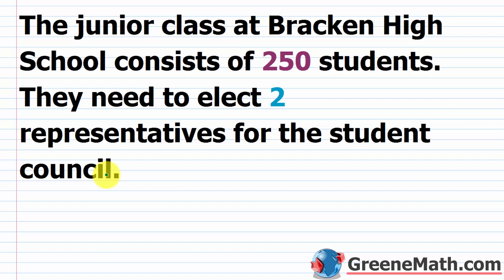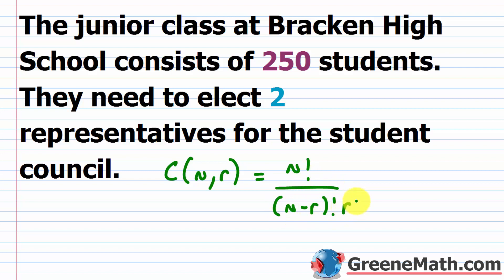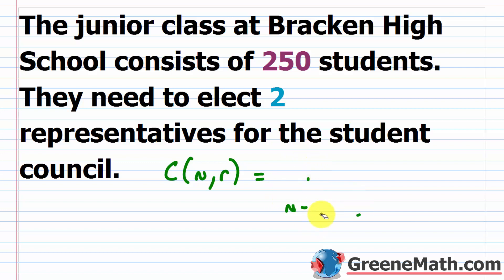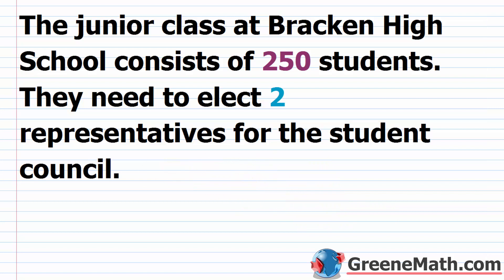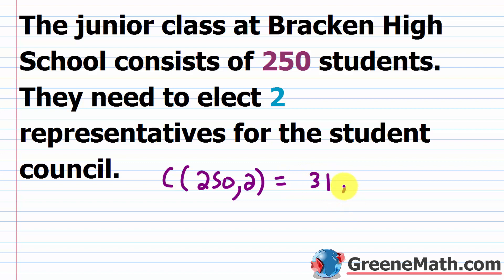Since the order doesn't matter, we use the formula for combinations — which we saw when discussing the binomial theorem. The formula is C(N, R) equals N factorial over (N minus R) factorial times R factorial. That extra R factorial in the denominator divides out the duplicates. Plugging in: C(250, 2) gives a result of 31,125.